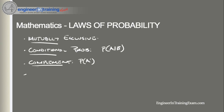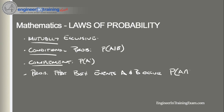The probability that events A and B both occur is the probability of the intersection of A and B, written as P(A∩B). If events A and B are mutually exclusive, meaning they can't occur at the same time, then P(A∩B) is equal to zero.